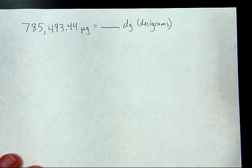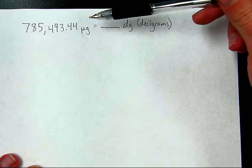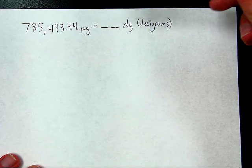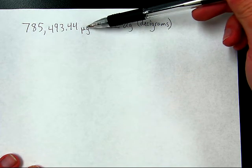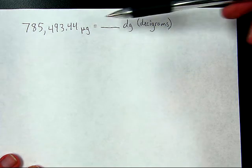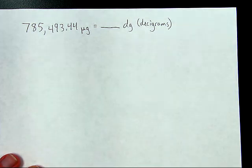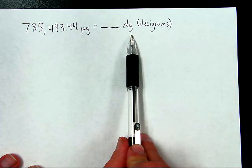Hello, it is time to have a look at a unit analysis example, or a dimensional analysis example, where we go from one unit to another where you may not know the relationship between them. This is micrograms, this is decigrams.